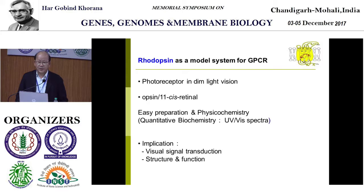Vision is mediated by absorption of light by photoreceptors in our eyes. There are two kinds of photoreceptor cells in vertebrates: rod cells, responsible for dim light vision, and cone cells, responsible for bright light and color vision. Rhodopsin is the photoreceptor responsible for dim light vision, consisting of protein opsin and 11-cis retinal. It has been used as a model system for studying G-protein coupled receptors, which are one of the most important targets for drug discovery.